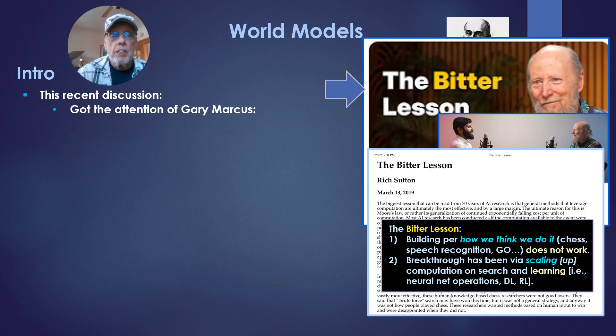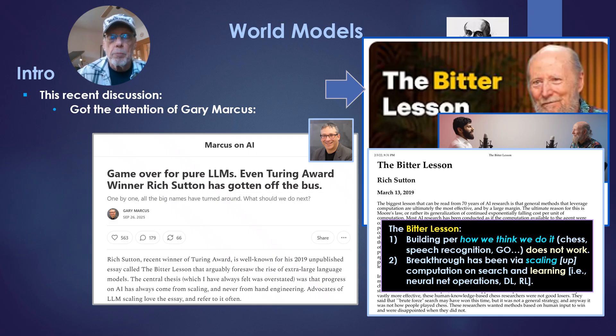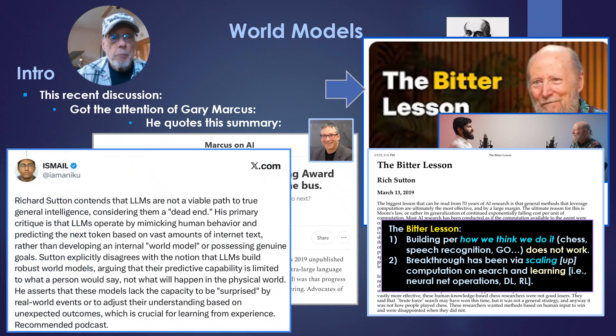So this got the attention of Gary Marcus, the premier AI critic. Game over for pure LLMs. Even Turing Award winner Rich Sutton has gotten off the bus of LLMs. And he quotes this summary, which is a fairly good summary. Richard Sutton contends that LLMs are not a viable path to true general intelligence, considering them a dead end. His primary critique is that LLMs operate by mimicking human behavior and predicting the next token on vast amounts of Internet text, rather than developing an internal world model.